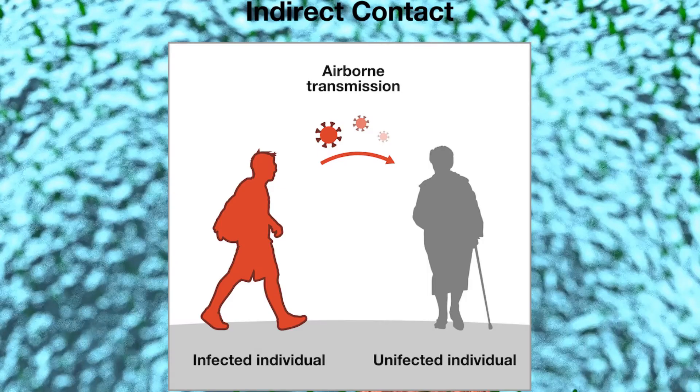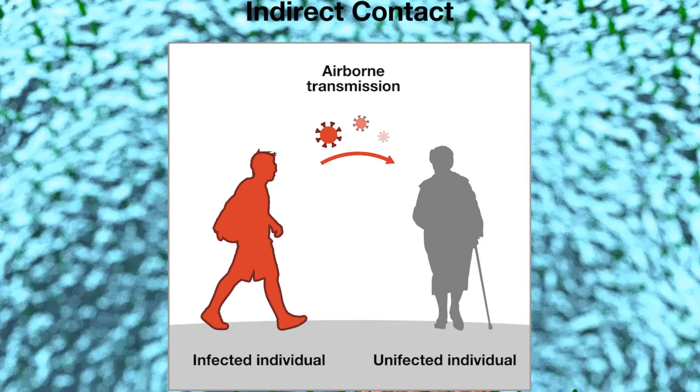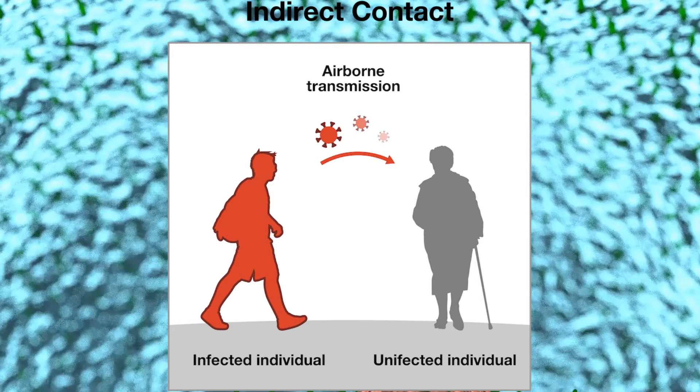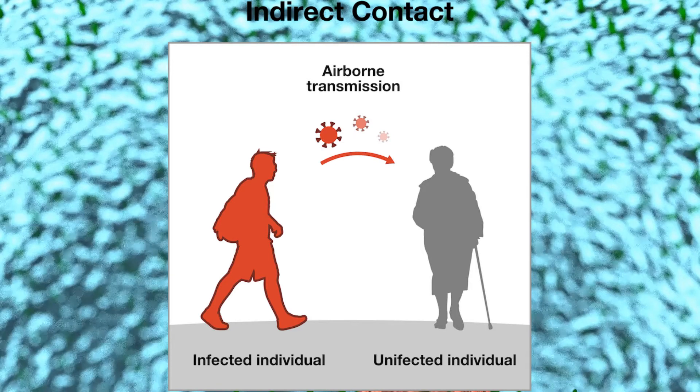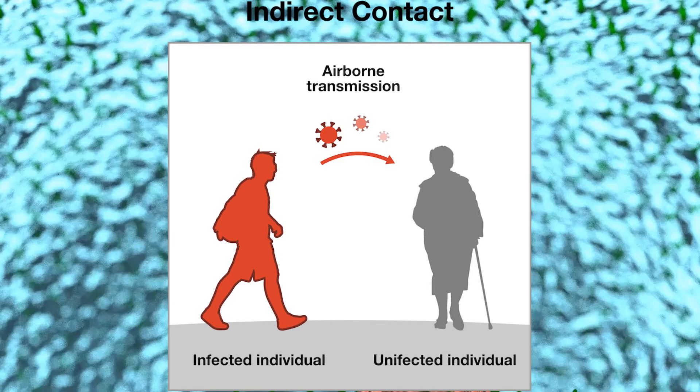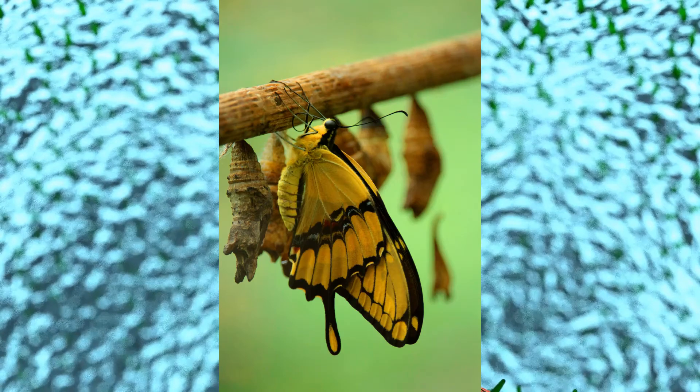This means that at some point back in evolutionary terms, there was a time in which one of their ancestors was exposed, survived the exposure, and now we see it in the next or if not many generations later. This is what has happened with the monarch butterfly.